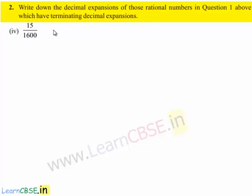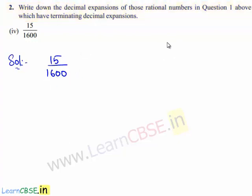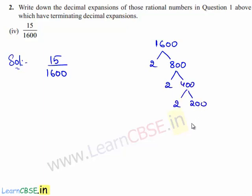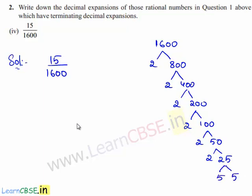Now let us move on to the next rational number that has terminating decimal expansion. The rational number is 15 upon 1600. To obtain its decimal expansion, first we need to write its denominator as a product of its prime factors. Therefore 1600 can be written as 2 times 800, 800 as 2 times 400, 400 as 2 times 200, 200 as 2 times 100, 100 as 2 times 50, 50 as 2 times 25, and 25 as 5 times 5. Therefore 1600 can be written as 2 power 6 times 5 squared.